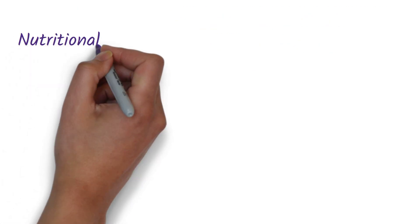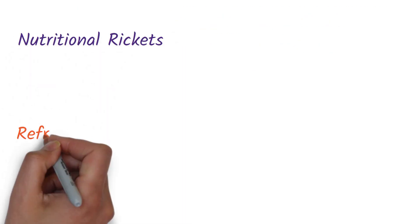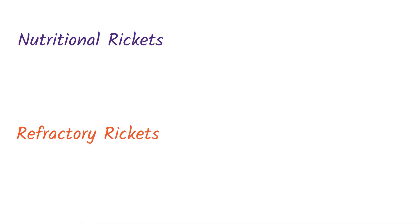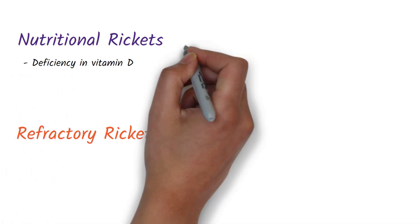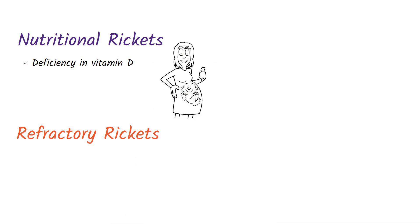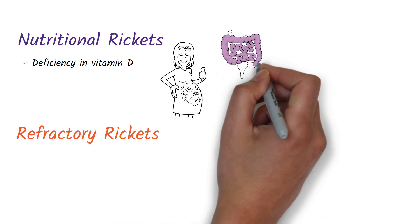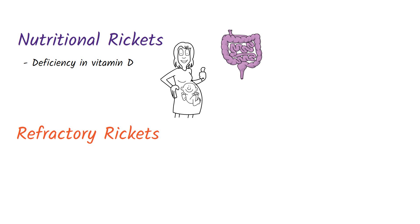The etiology of rickets can be divided into two categories: nutritional rickets and refractory rickets. Nutritional rickets can be due to a deficiency in vitamin D that can occur due to congenital deficiency, malabsorption if the baby is having diseases like celiac disease or cystic fibrosis, then vitamin D will not be properly absorbed.